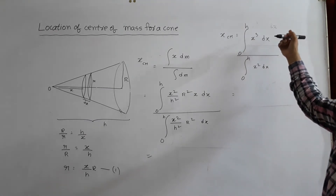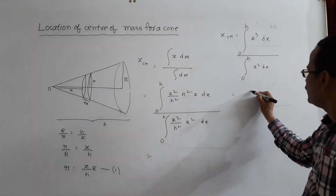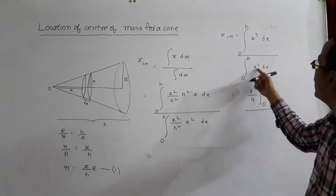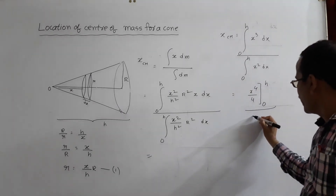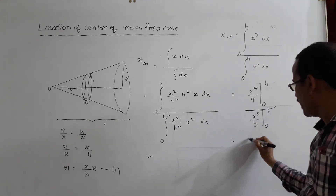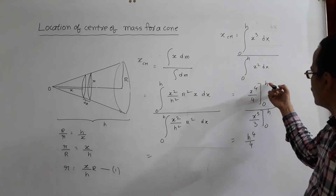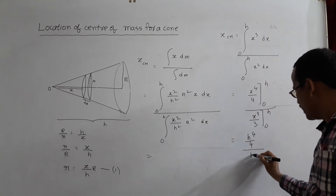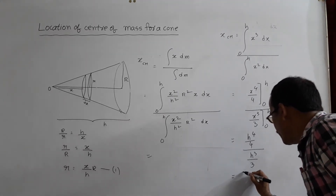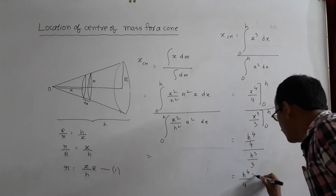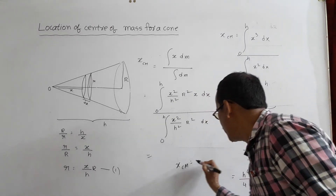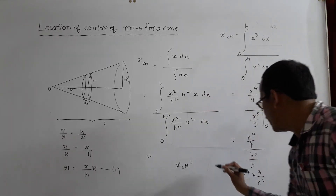Evaluating: the integral of x³·dx is x⁴/4, and the integral of x²·dx is x³/3, both with limits 0 to H. So Xcm = (H⁴/4) divided by (H³/3) = H⁴/4 × 3/H³ = 3H/4. Therefore, Xcm = 3H/4.